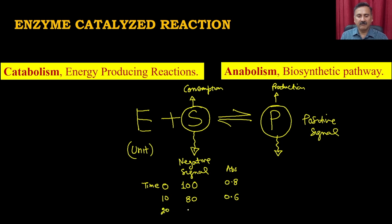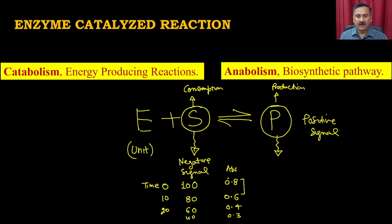After 20 minutes the absorbance goes to something like 0.4, and ultimately approaches zero. So you have a decrease in absorbance over time. You started with 100 molecules and now have 80 molecules, meaning 0.2 OD of substrate was consumed in 10 minutes. That is how you use these values to calculate enzyme activity.